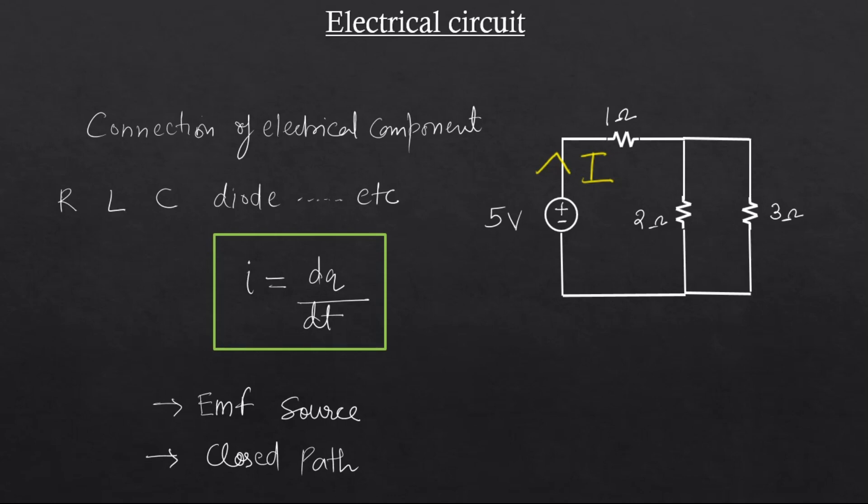A closed path is basically a path that starts and ends at the same point. Like suppose if there are two points A and B apart, that will start at A and terminate at B, then starts from B and terminates at A. This will be a closed path. Current needs such kind of path to flow.